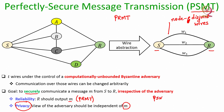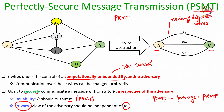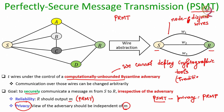PSMT minus privacy is the same as PRMT — if you just want reliable communication but are fine to compromise privacy then you can use PRMT protocols. But if you also want privacy on top of reliability then you have to go for PSMT protocols. Since we are assuming a computationally unbounded adversary, we cannot deploy traditional cryptographic encryption schemes, because the security of all these traditional encryption schemes holds under the assumption that the adversary is computationally bounded.